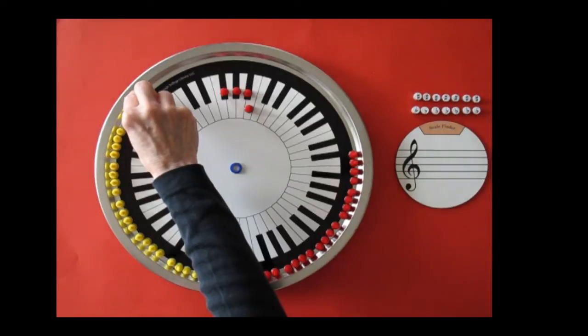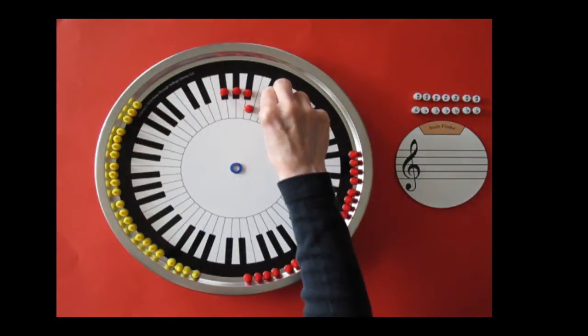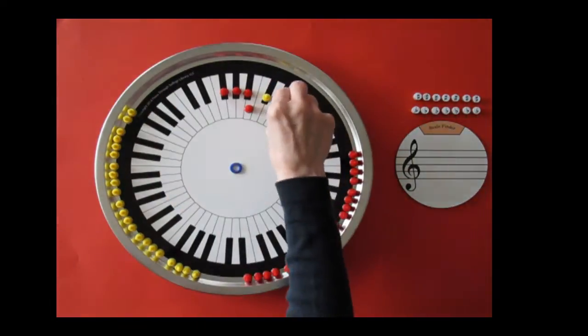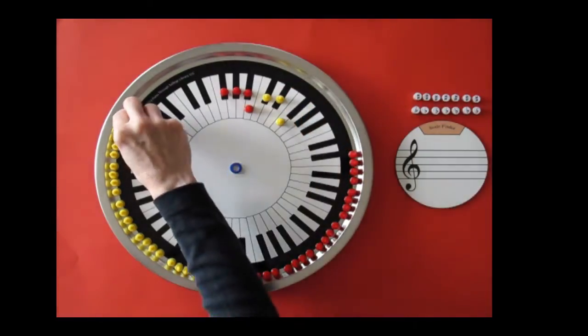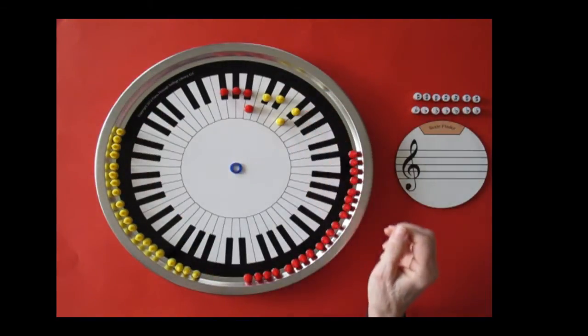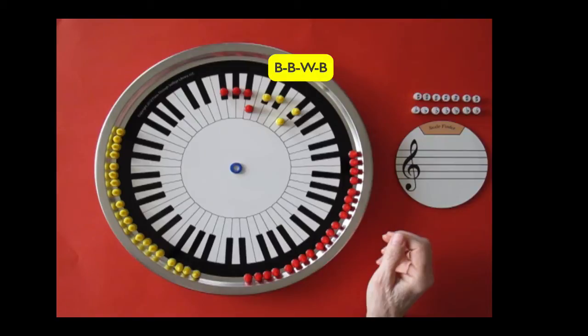For the second tetrachord, place a yellow pawn on the whole-step from where the red tetrachord ended. Whole-step, whole-step, half-step. The topography of this tetrachord is black, black, white, black.